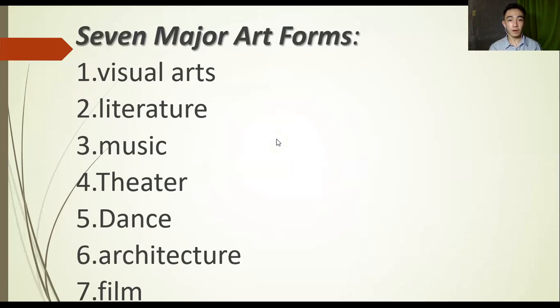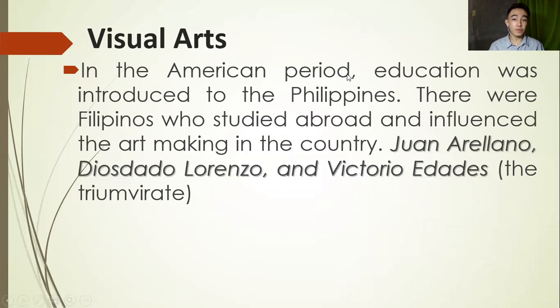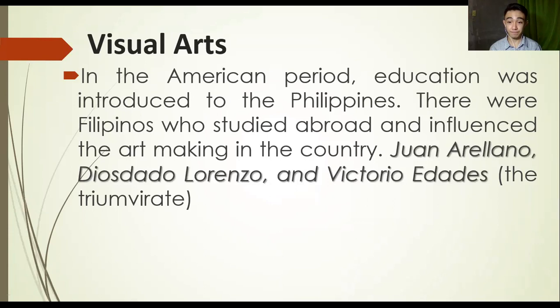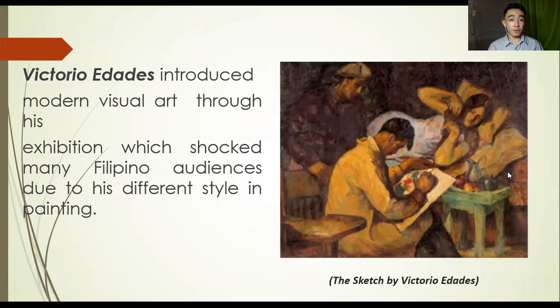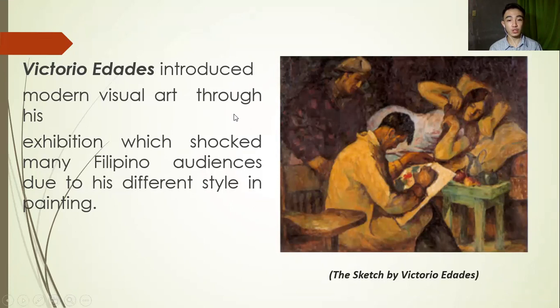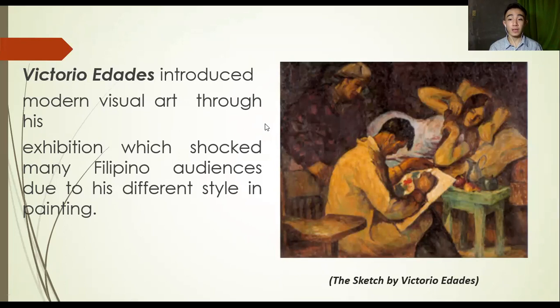Our first one will be visual arts. In the American period, education was introduced to the Philippines. There were Filipinos who studied abroad and influenced the art making in the country — one is Juan Arellano, Justrado Lorenzo, and Victorio Edades. Victorio Edades introduced modern visual art through his exhibition, which shocked many audiences due to his different style in painting. Instead of using bright and happy colors, he used dull and dark hues in his works.